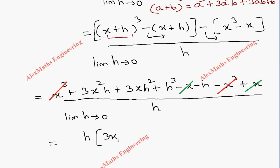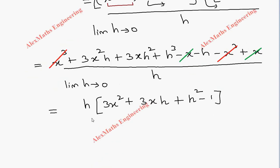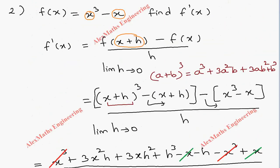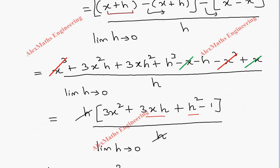From the remaining numerator we take h as a common factor, giving h(3x² + 3xh + h² - 1). We cancel h from numerator and denominator. With limit h → 0, the terms with h become 0, leaving f'(x) = 3x² - 1. So the derivative of x³ - x is 3x² - 1.